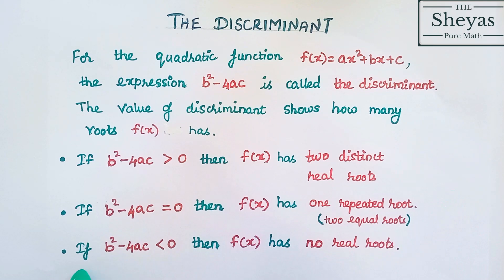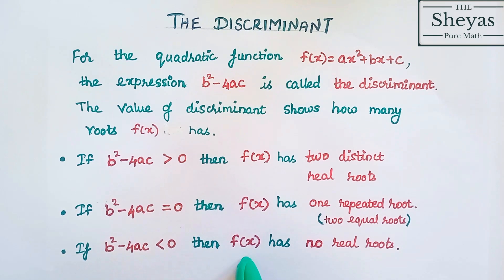If b squared minus 4ac is less than 0, then f of x has no real roots — both the roots are imaginary. Let us do some problems based on this and you will understand more clearly.